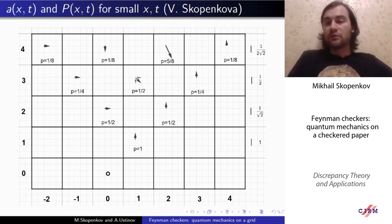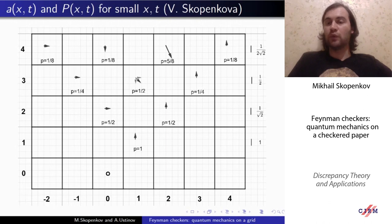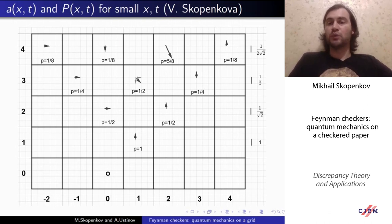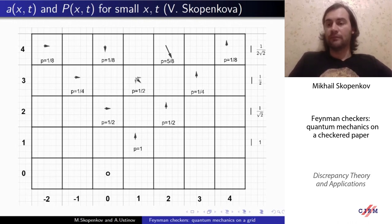Let us discuss a few particular values to make the construction even more clear. For square (1, 1), there is only one checker path from the origin, and it has no turns. That means the vector is directed upwards. By our convention, the length is one, the squared length is also one, and the probability to find the electron there equals one. Notice that the checker cannot access any other square on the horizontal line t equals one — all other squares have zero probability, and all the probability is concentrated in just one square.